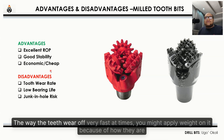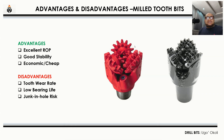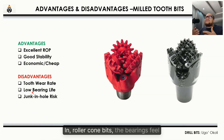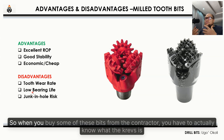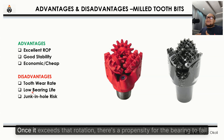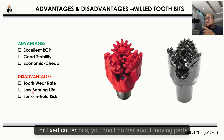Disadvantages of mill tooth bits: the teeth wear off very fast. If excessive weight is applied, the teeth can break off. With axial vibrations and bit bouncing, the teeth don't do well — they can deform or break off. Most especially, they have very low bearing life. Every roller cone bit has a carriage — that's the thousand revolutions maximum. Once it exceeds that rotation there's a propensity for the bearing to fail, the cones can break off, and you have junk in your well.